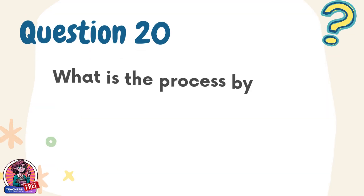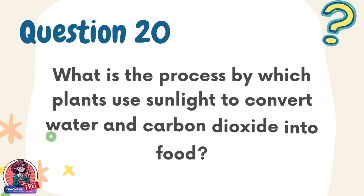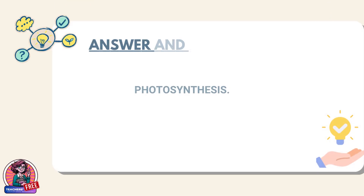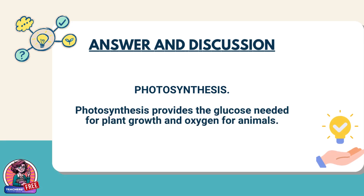Question 20. What is the process by which plants use sunlight to convert water and carbon dioxide into food? Answer: Photosynthesis. Photosynthesis provides the glucose needed for plant growth and oxygen for animals.